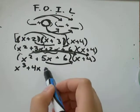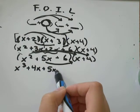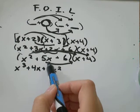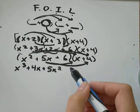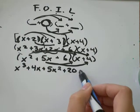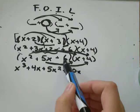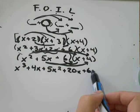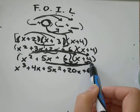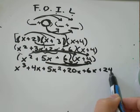5x times x would be 5x squared. 5x times 4 would be 20x. And then 6 times x would be 6x. And 6 times 4 would be 24.